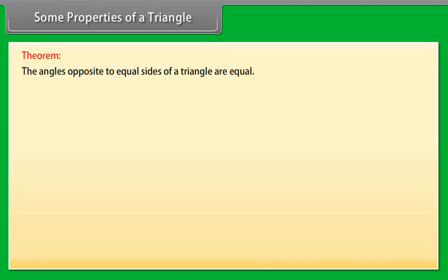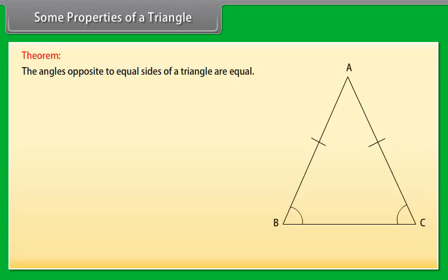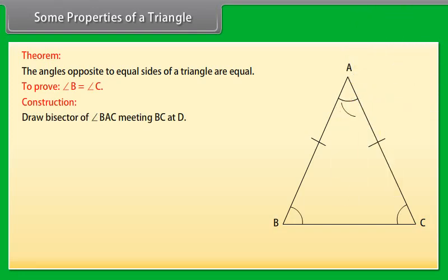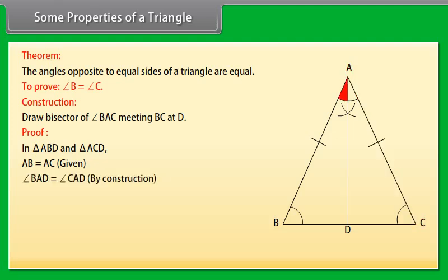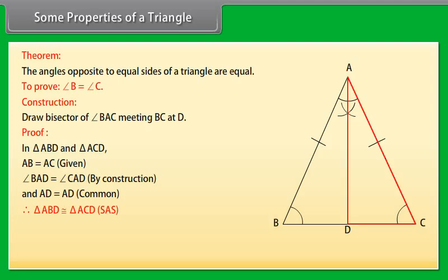Some Properties of a Triangle. Theorem: The angles opposite to equal sides of a triangle are equal. Given is a triangle ABC in which AB is equal to AC. We have to prove that angle B is equal to angle C. Construction: Draw the bisector of angle BAC meeting BC at D. Proof: In triangle ABD and triangle ACD, AB is equal to AC (given), angle BAD is equal to angle CAD (by construction), and AD is equal to AD (common). Therefore, by SAS rule, triangle ABD is congruent to triangle ACD. Hence, angle B is equal to angle C.